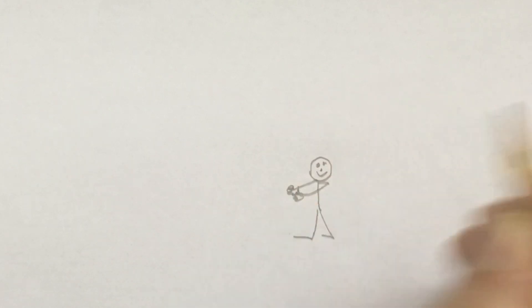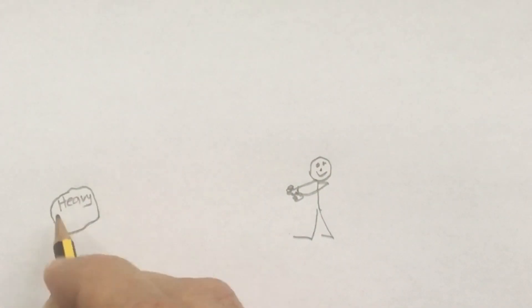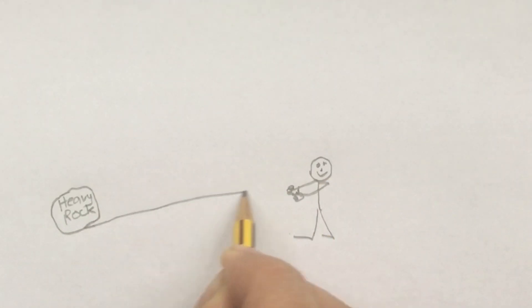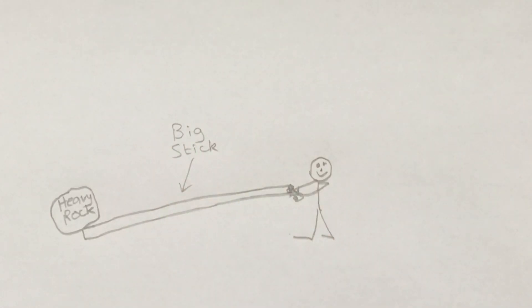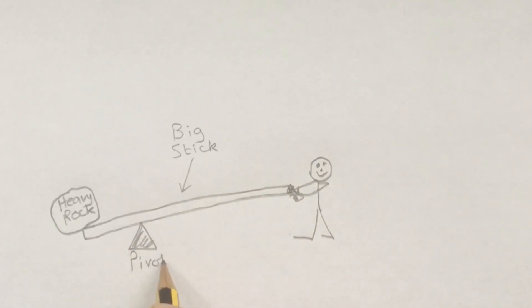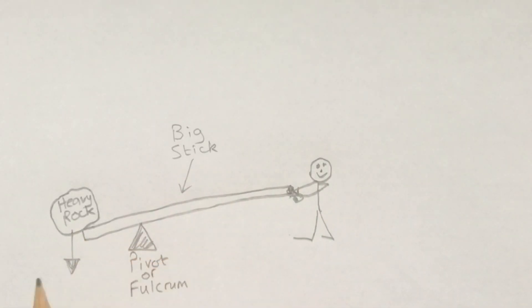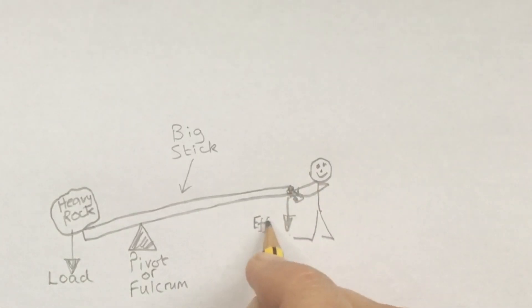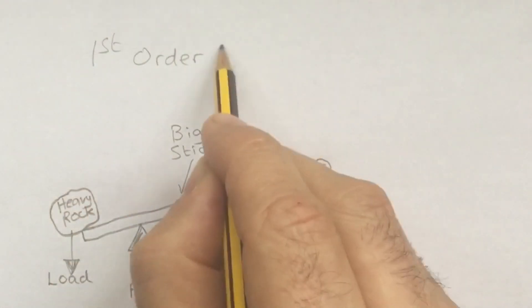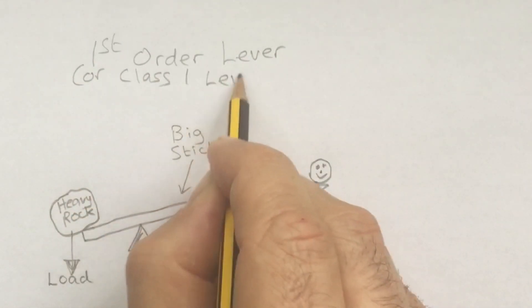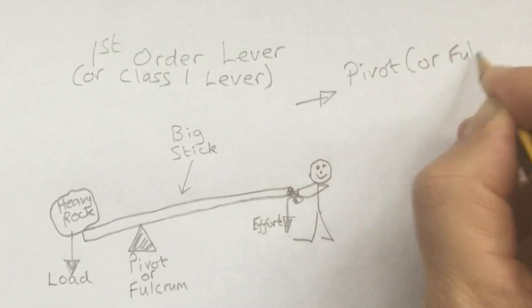Once upon a time there was a man who wanted to move a heavy rock but he wasn't strong enough. His mate gave him a big stick to try and move the rock, but it was still too hard. So his mate said why not try putting a pivot underneath the stick. He put a pivot or fulcrum underneath, and because his effort was further away from the pivot than the load, he had lots of leverage and could move the rock quite easily. He'd created a first order lever, also known as a class one lever — this is where the pivot is somewhere between the load and the effort.